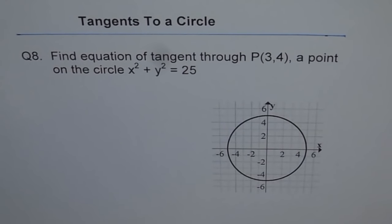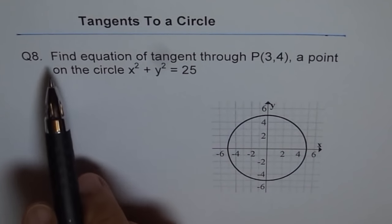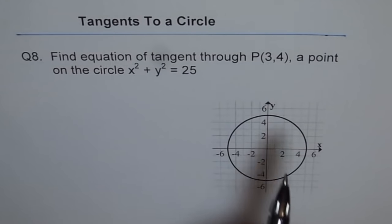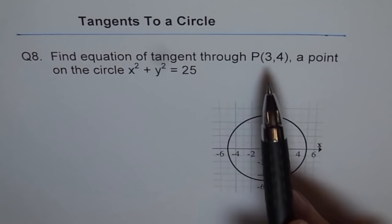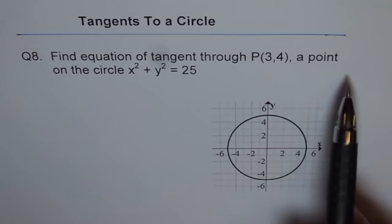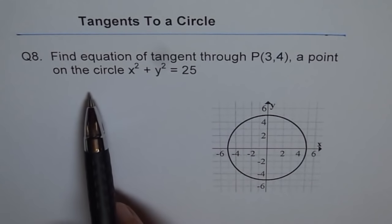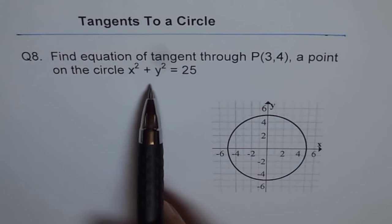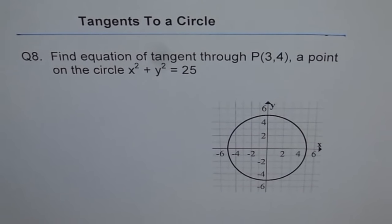Tangents to a circle, question 8. Find the equation of the tangent through point P(3, 4), a point on the circle x² + y² = 25.